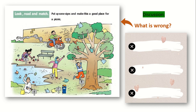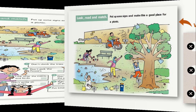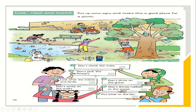Don't throw the rubbish in the water — well done! So what is wrong in this picture? There is rubbish everywhere — look, it is everywhere! And what else? We have dirty water. What else? No flowers, because this girl is picking the flowers. Is this a good thing? No.